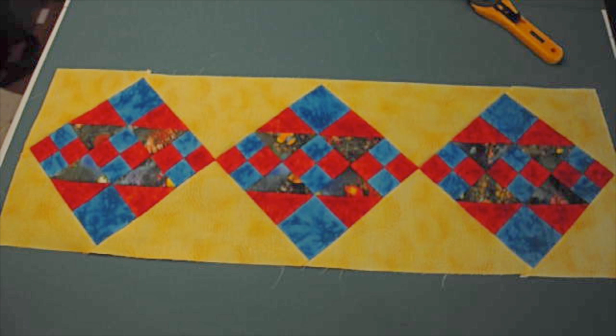So here's our finished product with three blocks set on point with your four corners and your side setting triangles. And for making a larger quilt, you just make more of them. I hope you had fun learning how to set blocks on point in this video.